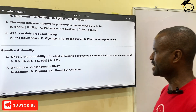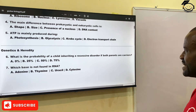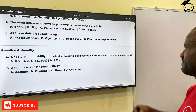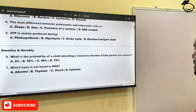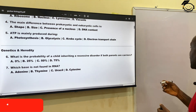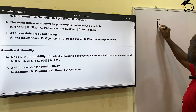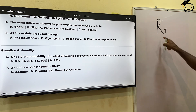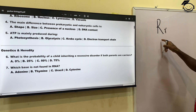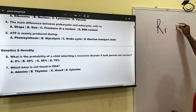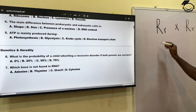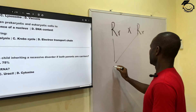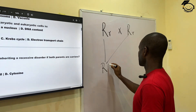Question six: what is the probability of a child inheriting a recessive disorder if both parents are carriers? Let's look at the board. If we have both parents being carriers, this is for the father crossing with the mother — they are both carriers. Now, if they cross, their offspring becomes this.